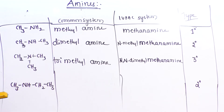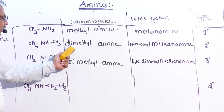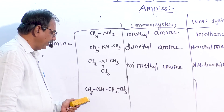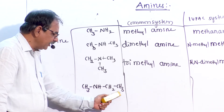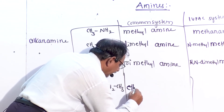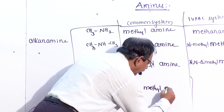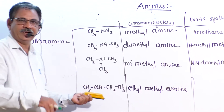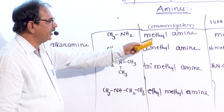In the common system, different alkyl groups are arranged alphabetically. One group is methyl, another is ethyl. Arranged alphabetically: ethyl comes before methyl, so the compound is named ethylmethylamine. In the IUPAC system, the group with the maximum number of carbon atoms is the parent chain. The ethyl group has two carbons, so the parent is ethanamine, and the methyl substituent on nitrogen gives N-methylethanamine.